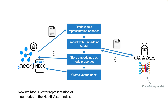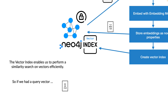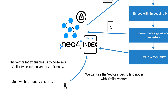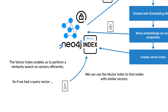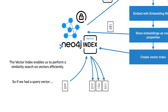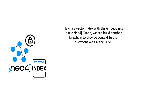Now we have vector representations of our nodes in the Neo4j vector store. The vector index enables us to perform a similarity search on vectors efficiently. For example, if we have a query vector and perform a similarity search, the vector store would return three, five, or k similar vectors by comparing them against the stored vectors. The question is: how does this help us with our problem?